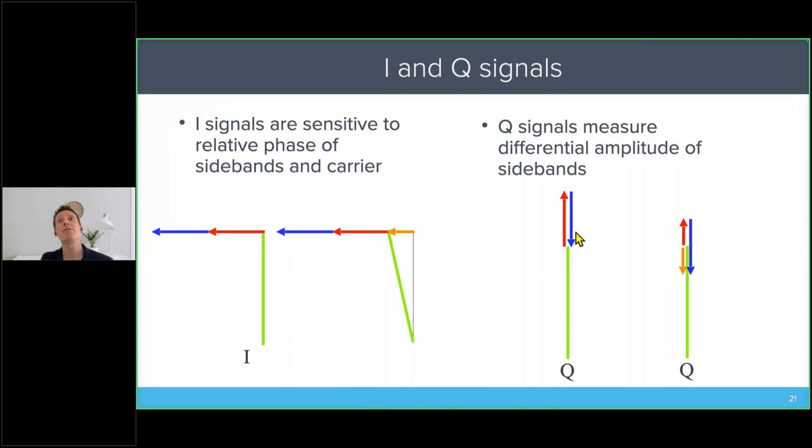However, if one of the sidebands changes size, if it's attenuated or if it grows—which is more rare—then these sidebands no longer cancel and we do get a dot product with the carrier. So I signals can look at carrier phase, and the Q signals can look at the differential amplitude of the sidebands.